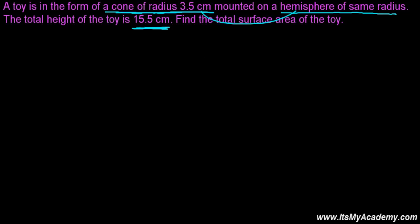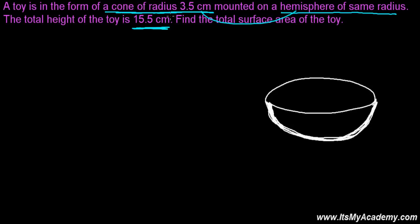Once you understand the question, the next step is picturizing. So let's picturize this. The cone is mounted over a hemisphere, so at the bottom we have a hemisphere. Let's say this is the hemisphere, and a cone is mounted over it — so I'm drawing a cone over it. The cone is mounted over this hemisphere.